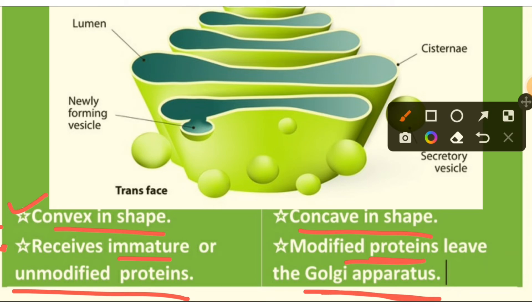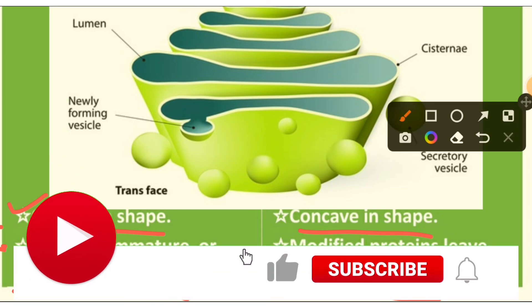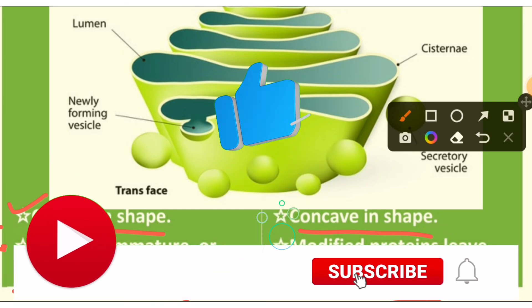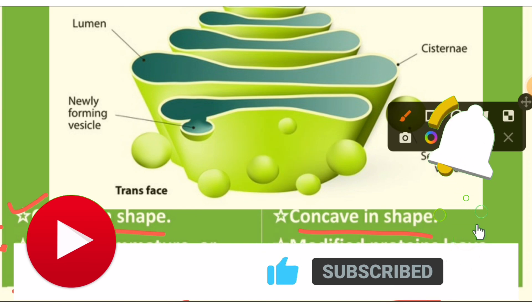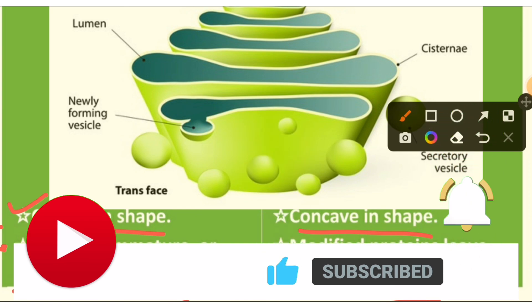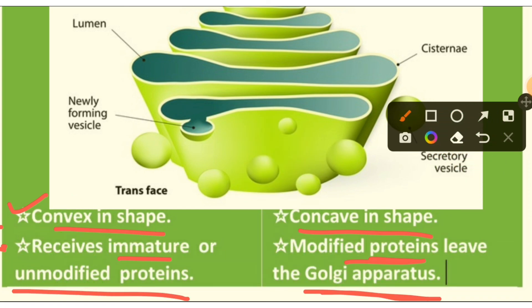The cis phase receives immature and unmodified proteins, and in the trans phase modified proteins leave the Golgi apparatus. That is all about the difference between the cis and trans phase of the Golgi complex. If you liked the session, please like and subscribe to the channel for more interesting content, hit the bell icon, and see you in the next session. Bye bye!